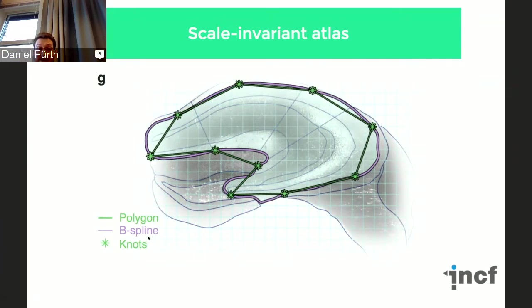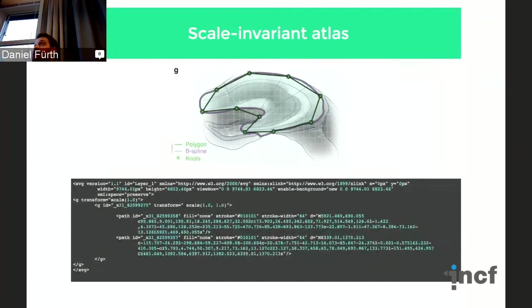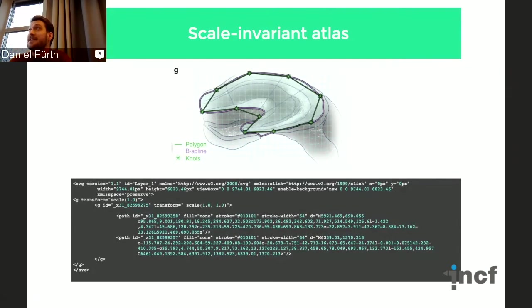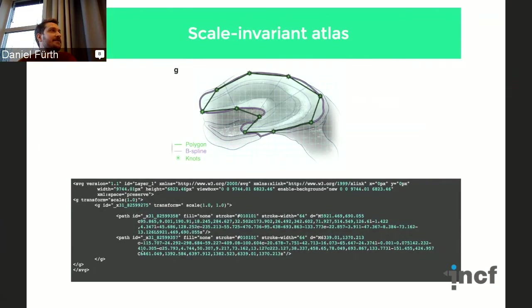B-splines can be stored in an XML-based format like SVG, which everyone has seen on the web. The good part about this format is you can treat it with Git. If there's a discussion about changing the definition of an anatomical region, you can reach agreement using Git and SVG — rather than dealing with arrays of binary data several hundred megabytes in size. Here you have something readable.